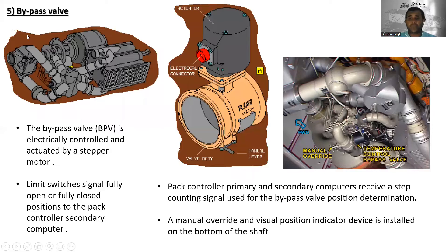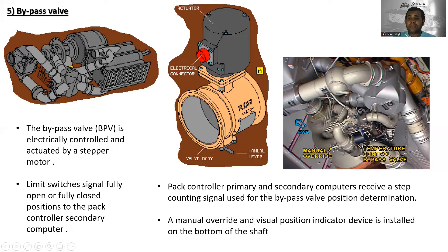Next is the bypass valve — the temperature control bypass valve. The electrical connector, actuator, valve body, flow direction, and manual override are visible. The bypass valve is electrically controlled and actuated by a stepper motor. Limit switches signal fully open or fully closed positions to the pack controller secondary computer. The pack controller primary and secondary computers receive a step counting signal used for bypass valve position determination. A manual override and visual position indicator device is installed on the bottom of the shaft.